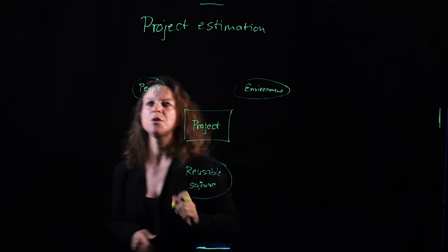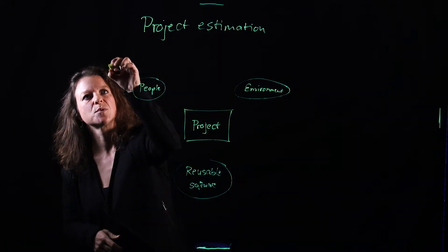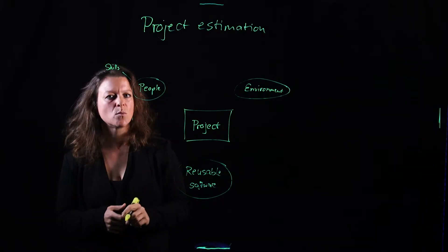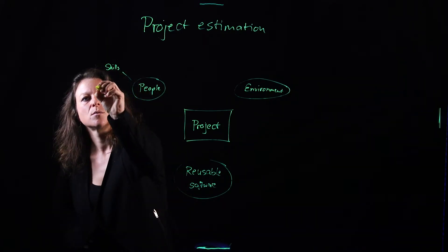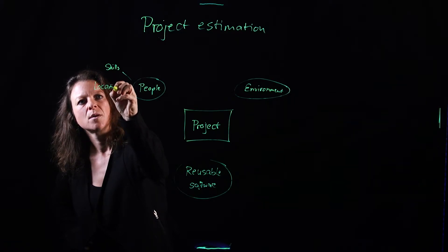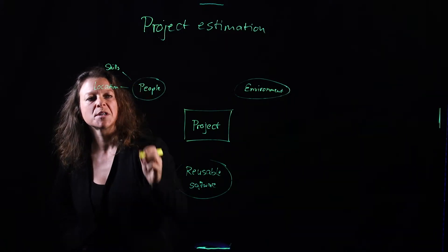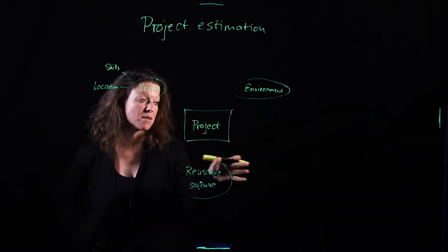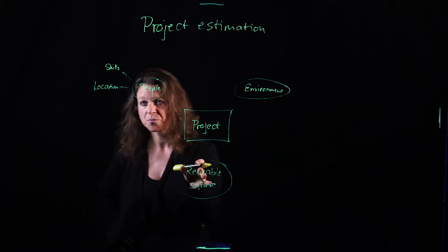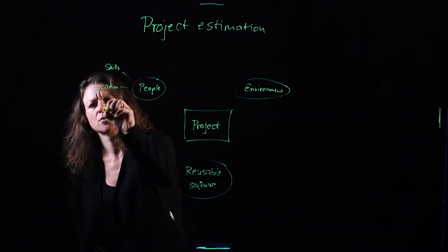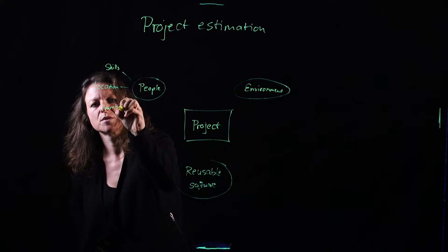Now let's look at each of those. For the people, we need to understand what are the skills of those people. We also need to understand where they are located. Are all my developers coming in every day? Are they working from home, flexible hours? Are they sitting in a different country, different time zone? All of that is interesting. And then also how many people do I have? So just the number.